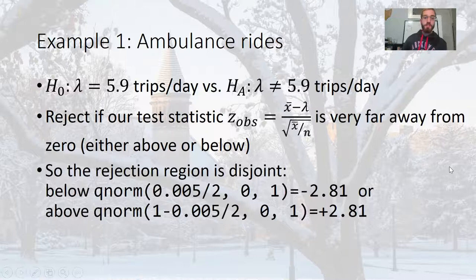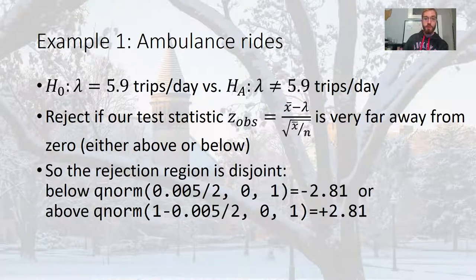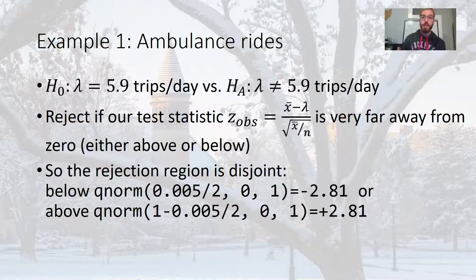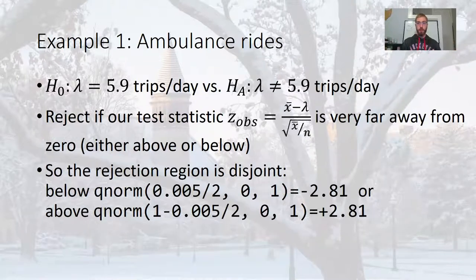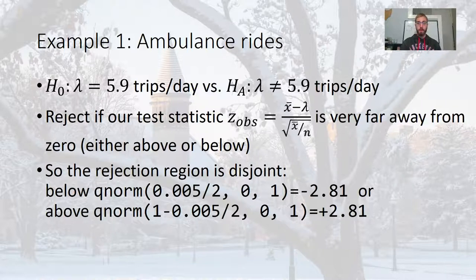So the rejection region is disjoint, as I said before, so we use QNORM 0.005 over 2, and it turns out that that's 2.81 and negative 2.81 is where I drew the cutoffs on my picture there. And I typed QNORM into R to get those values. So that's the only adjustment we have to make. So then my rejection region is going to be a little bit further out than it would have been ordinarily just if I had a one-sided hypothesis, as in I had a less than or a greater than sign in my alternative hypothesis. Remember, look to the alternative to see where the rejection region is, and that's what we always do.